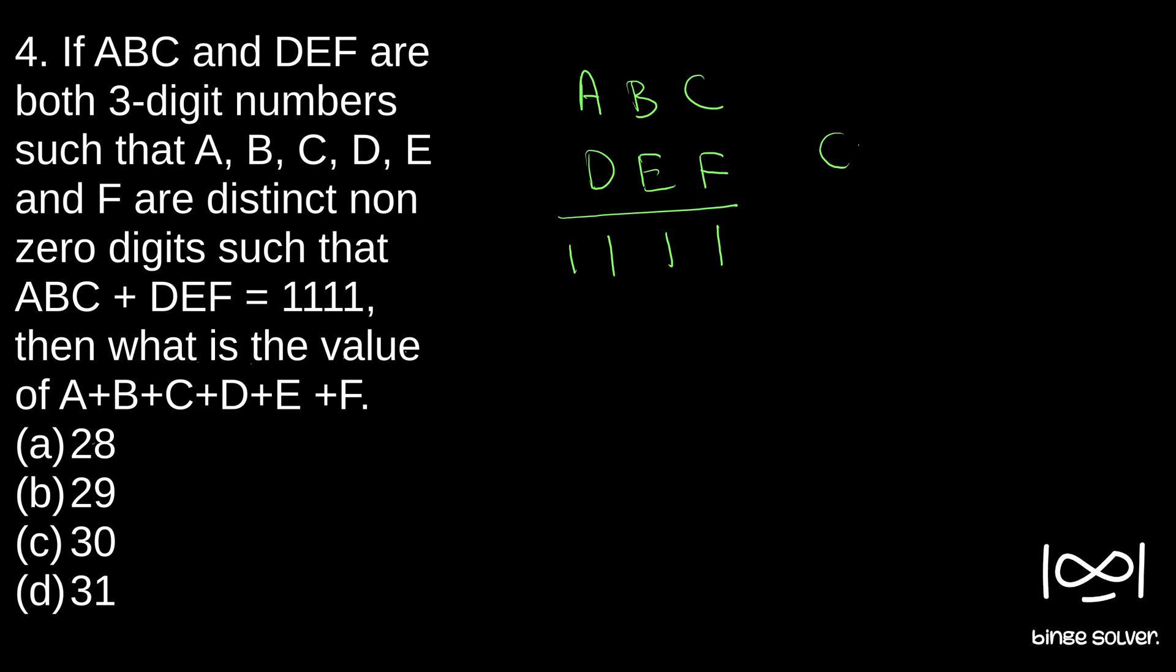As you can see, C plus F has to be 11. It cannot be just 1 because C plus F being distinct and giving a sum 1 means either one of them is 0 and another one is 1. Since they are non-zero distinct digits, C plus F cannot be 1. That means C plus F has to be 11.